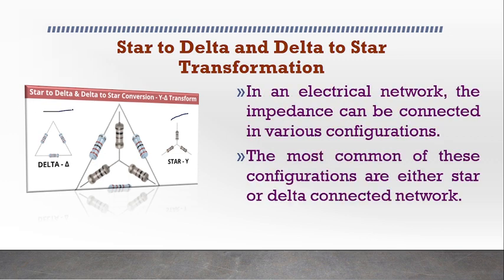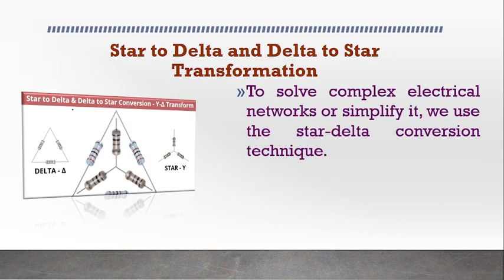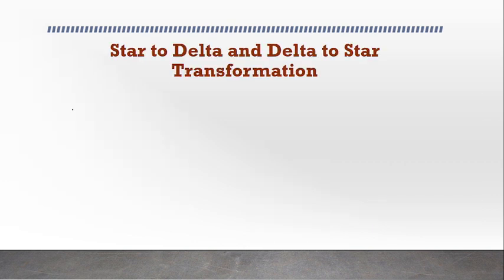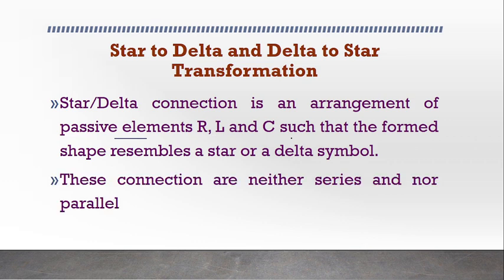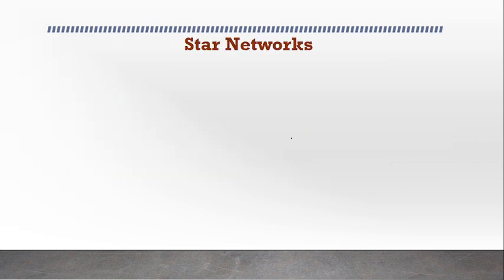In order to simplify them, we need to know about the star to delta as well as delta to star transformations. As discussed already, this is going to be an arrangement of passive elements, that is R, L and C, which neither remain in series or in parallel combination.